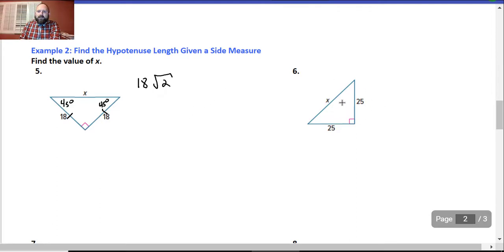So this one, I see that this is an isosceles. So I know that these are congruent with each other. So they must be 45, 45, 90 triangle. So then x has to equal 25 radical 2.